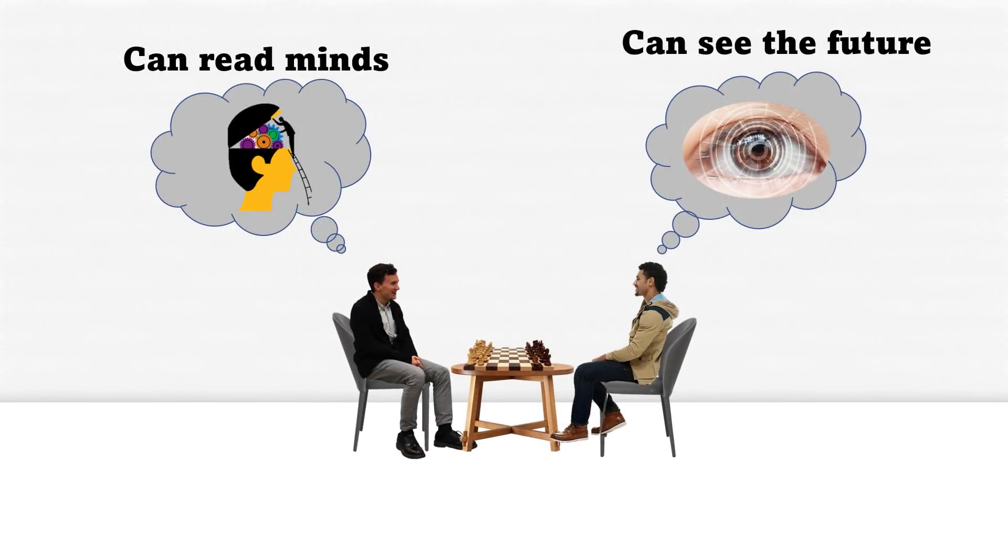Let's give friendly names to these players. This guy can see the future, so let's call him the Oracle. This player can read minds, so he is a mind reader.